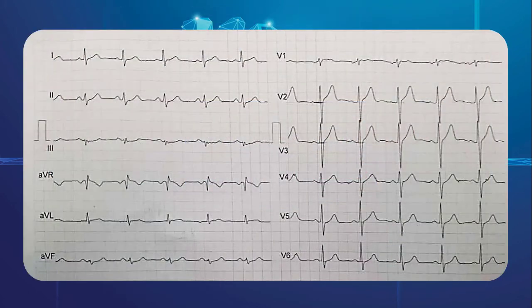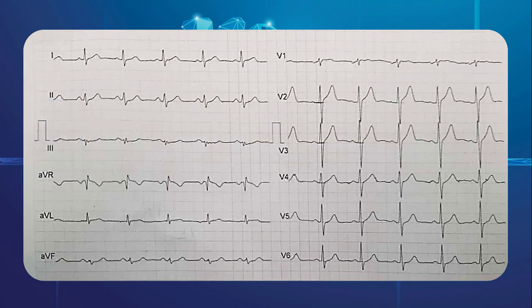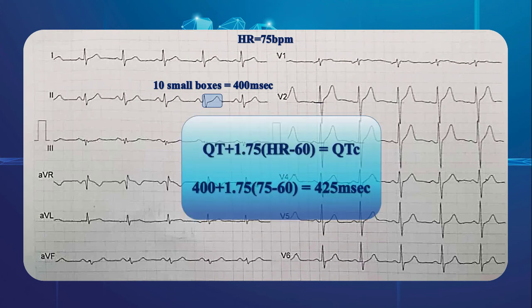This tracing is our second example. What do you think about the QT interval? Is it long, short, or normal? Pause the video to measure the QT interval on your own. Here, the heart rate and QT interval are 75 beats per minute and 10 small squares respectively. Therefore, according to Hodges formula, the QTc is 425 milliseconds, which is within normal range.